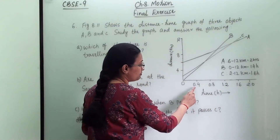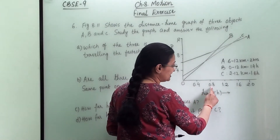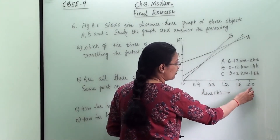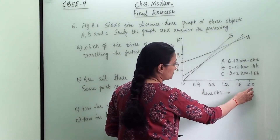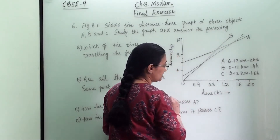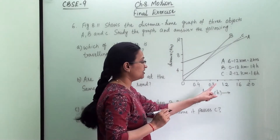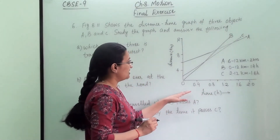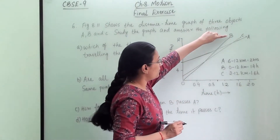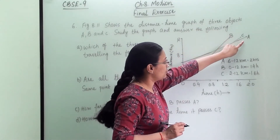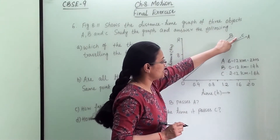The time on the x-axis is marked at 0.4, 0.8, 1.2, 1.6 and 2 hours, so 1 hour is in the middle and 2 hours is at the end. Now we have to study the graph for the three objects: object A, object B and object C.